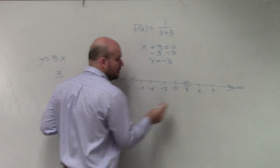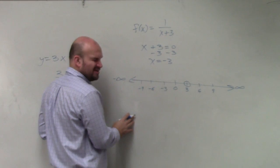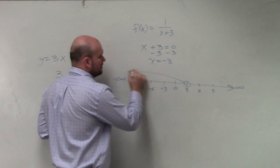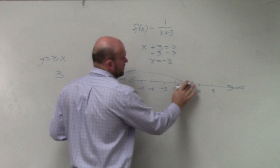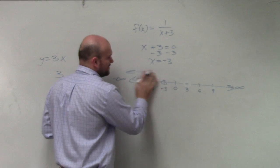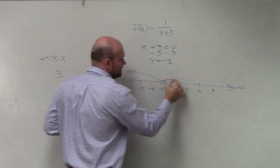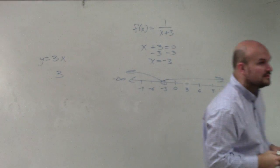So we put an open circle there, right? Remember graphing inequalities? Oh, well, all right, you're being smart now. Yes, it was negative 3, thank you. So we have negative 3 to 3, right?